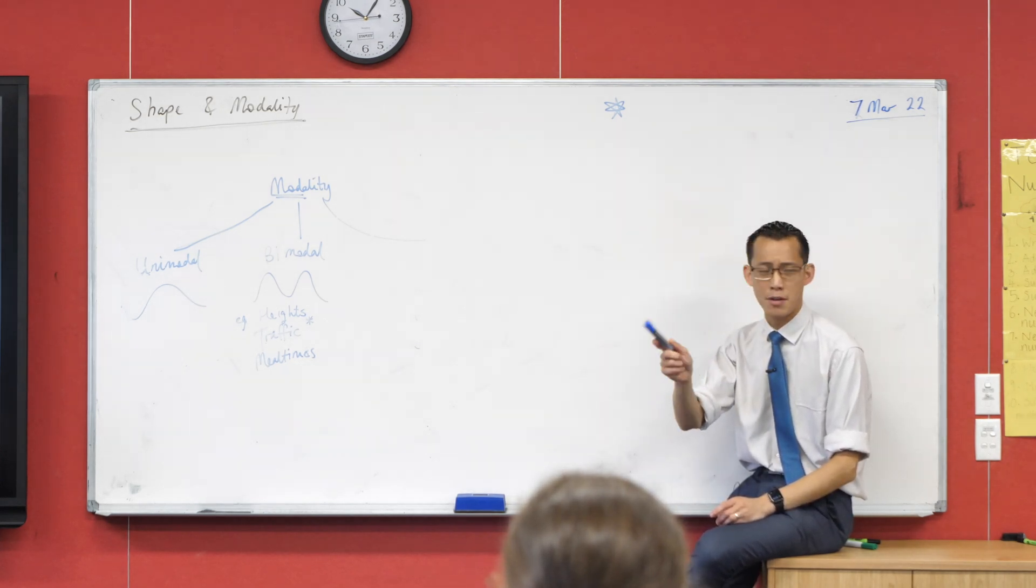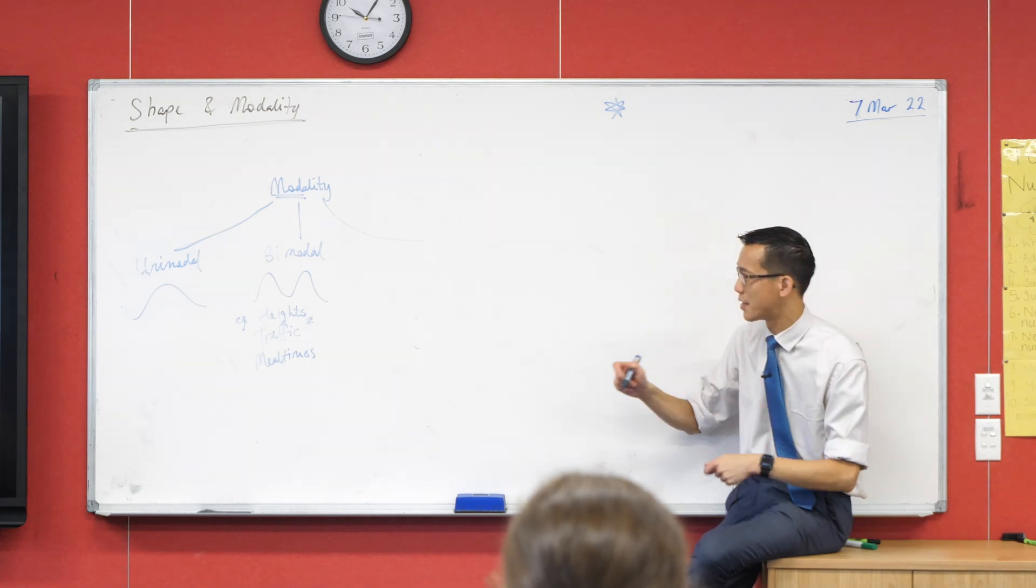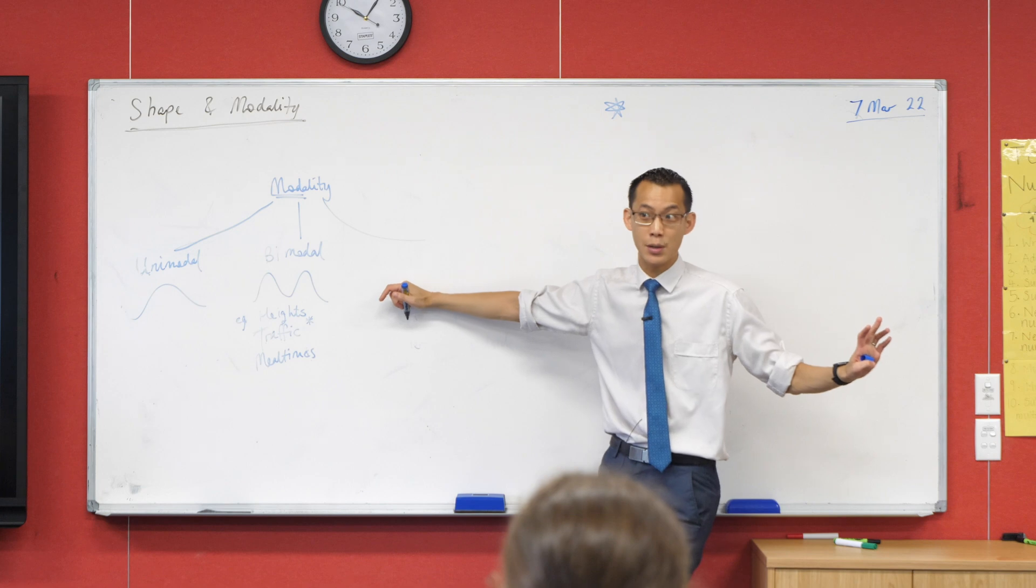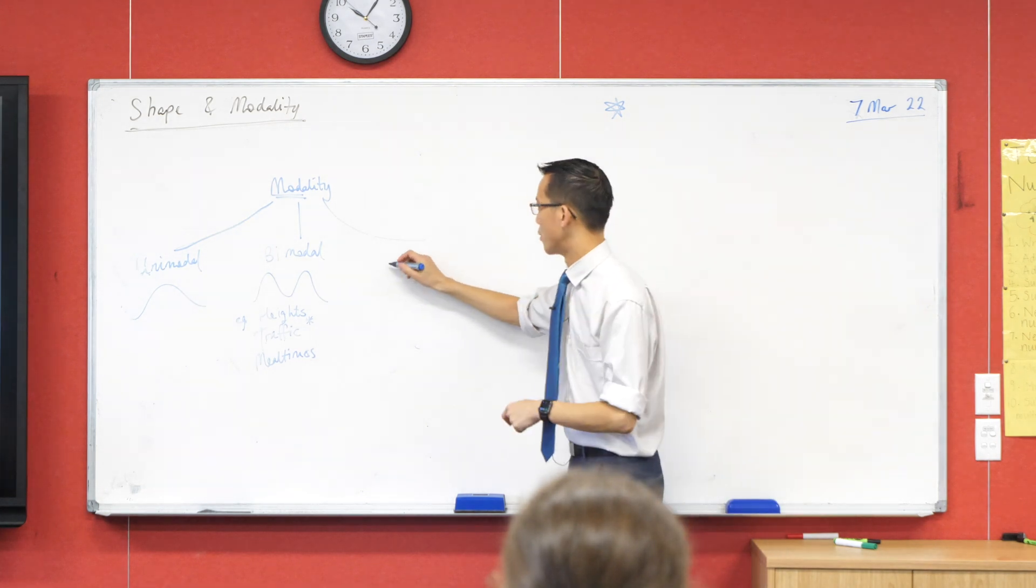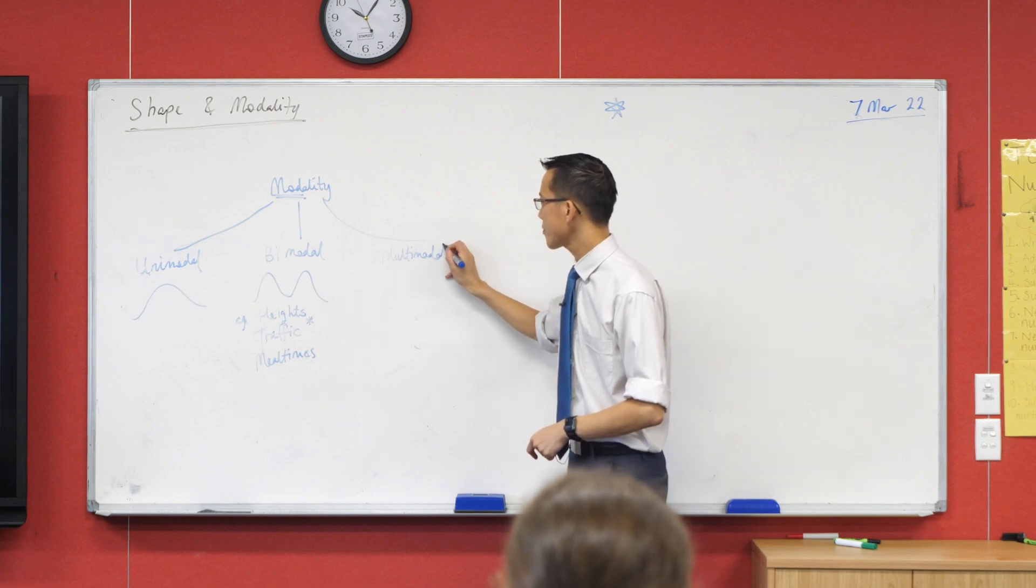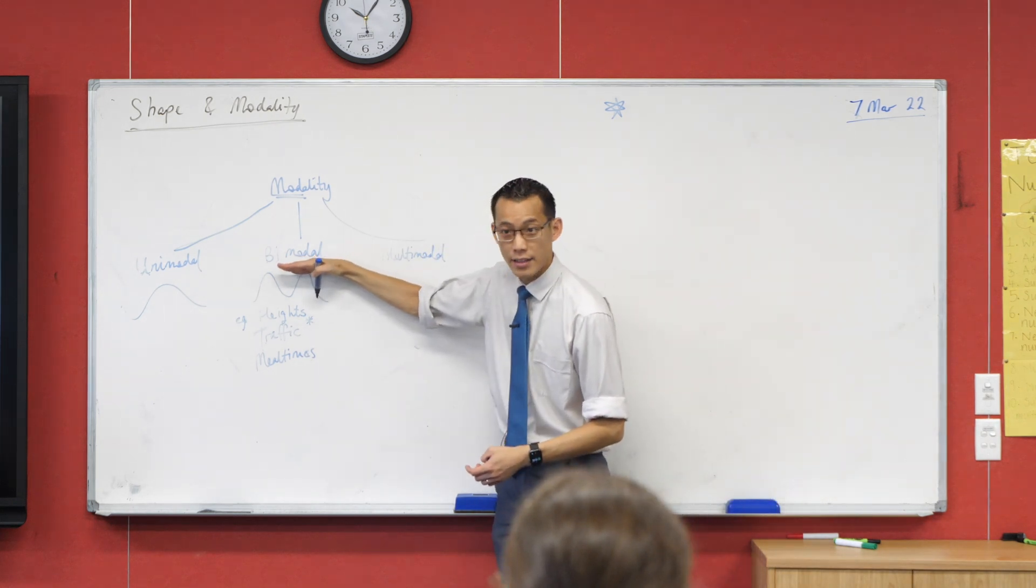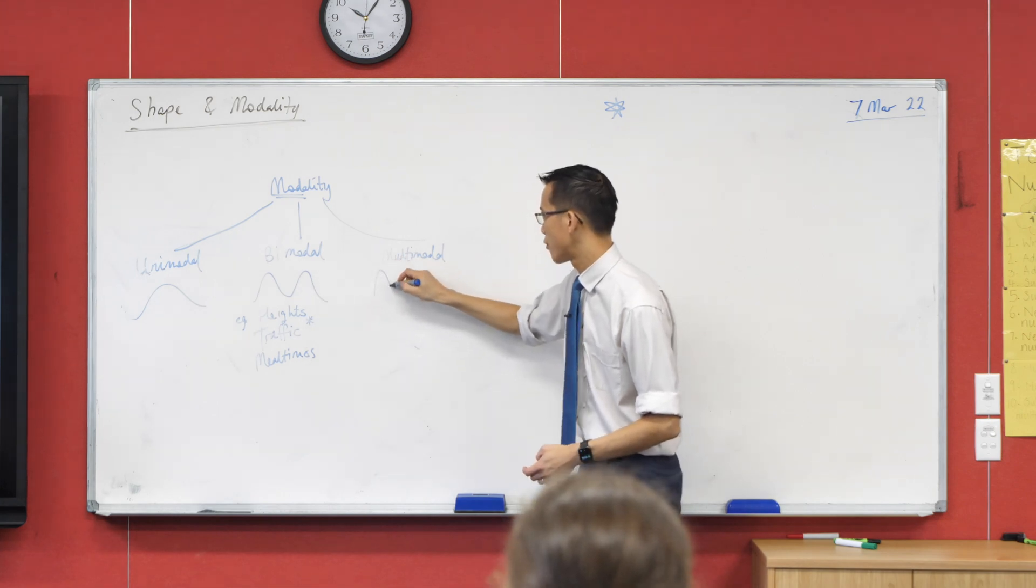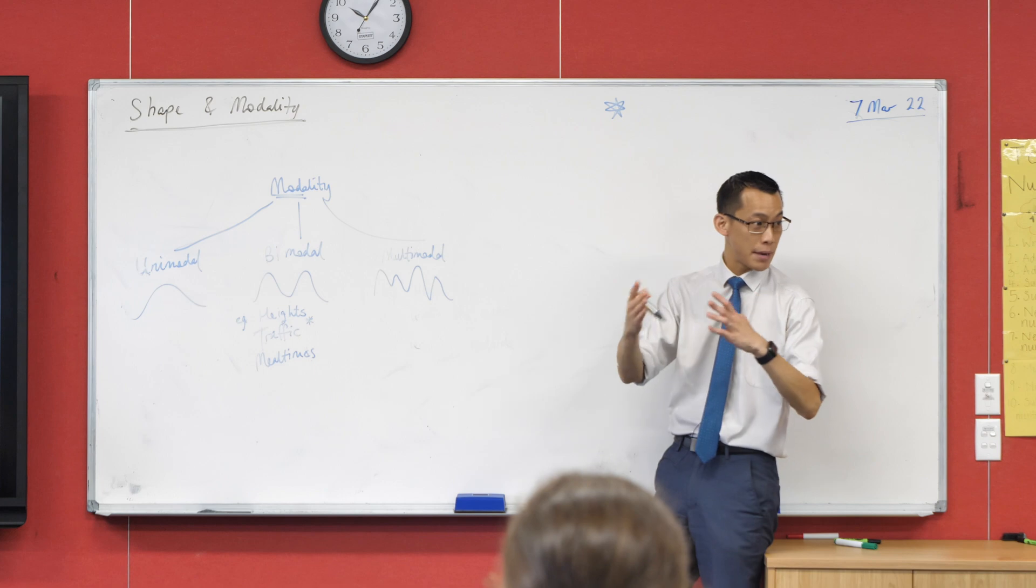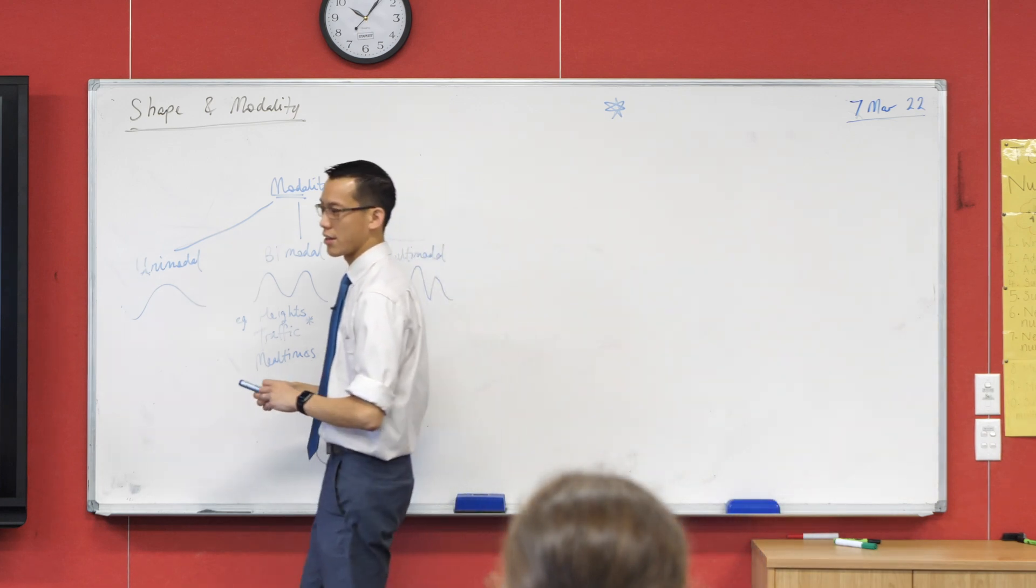So bimodal data all the time. Now when there's more than two, when there's just a whole bunch of different modes, we would say that's multimodal. So this is the third kind of modality that we need to have a look at. They don't have to be exactly the same height, even if they're roughly, you can clearly see there are some peaks. You will get these kinds of things occurring.